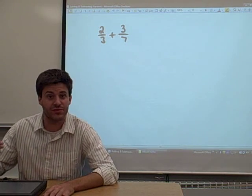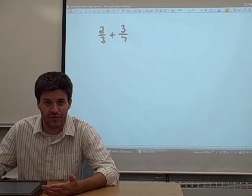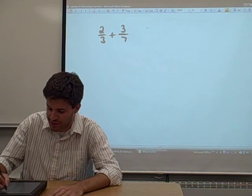So we'd like to add 2 thirds plus 3 sevenths. And any time you're adding fractions, of course, you have to find a common denominator.